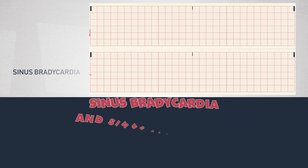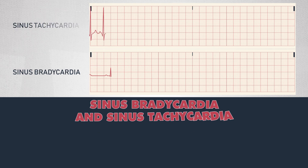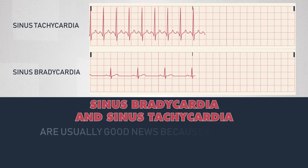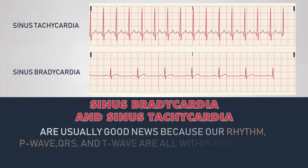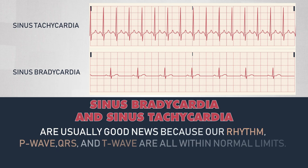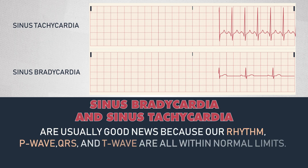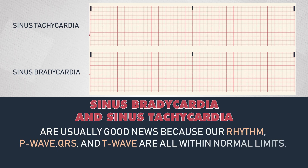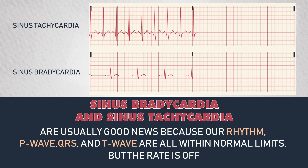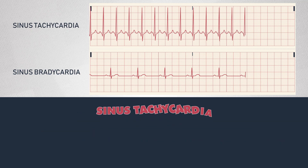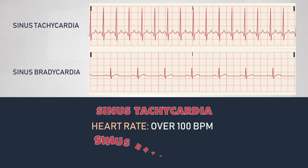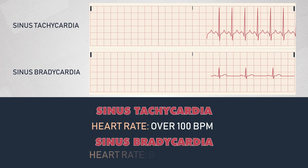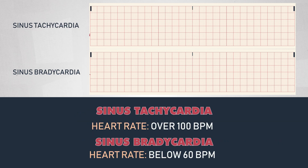Sinus bradycardia and sinus tachycardia are usually good news because the rhythm — P, Q, R, S, and T waves — are all within normal limits. It's just the rate that is off. Tachycardic is over 100 beats per minute, and bradycardic is below 60 beats per minute.